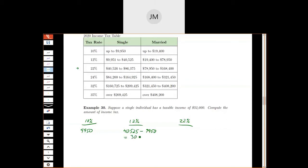So $30,575 of my money is taxed at this 12% rate. So this is how much is taxed at each of these rates.